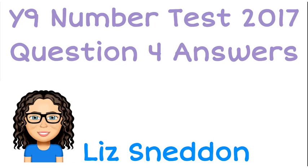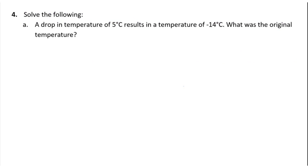Let's have a look at question 4. A drop of temperature of 5 degrees, so that tells me they're dropping, so they're going down, results in a temperature of negative 14, and what was the original?